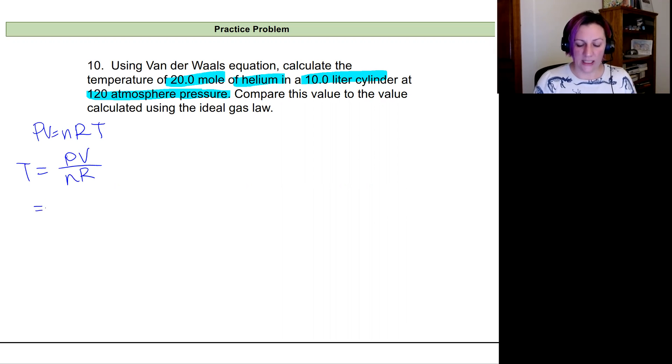And so plugging in, we're going to get a pressure that's 120 atmospheres. The volume was only 10 liters divided by our number of moles, which is 20. And then our ideal gas constant or our gas constant with atmosphere pressure units. So that's 0.08206 liters times atmospheres divided by moles Kelvin.